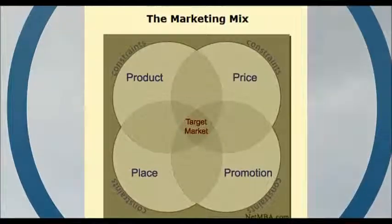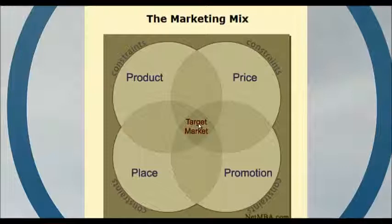Let's look at the diagram. You'll note that in the middle of the diagram we've got the target market — that's what we've been doing all this work for. The four P's determine the emphasis the business will place on each one of those variables, namely the product, the price, the place, and promotion.